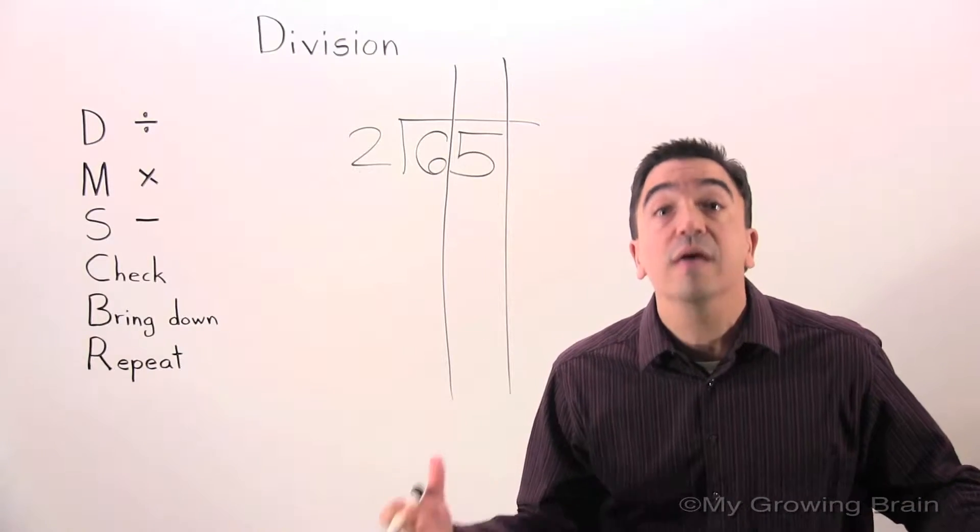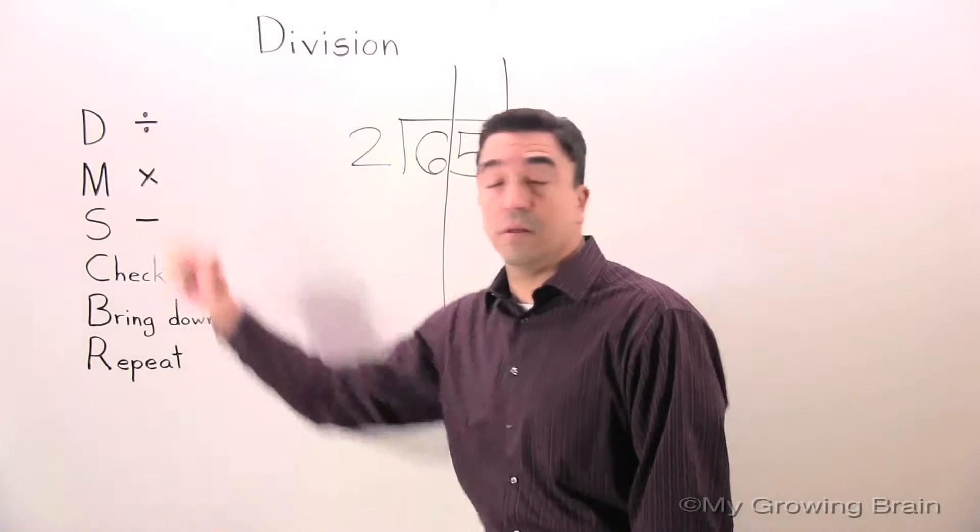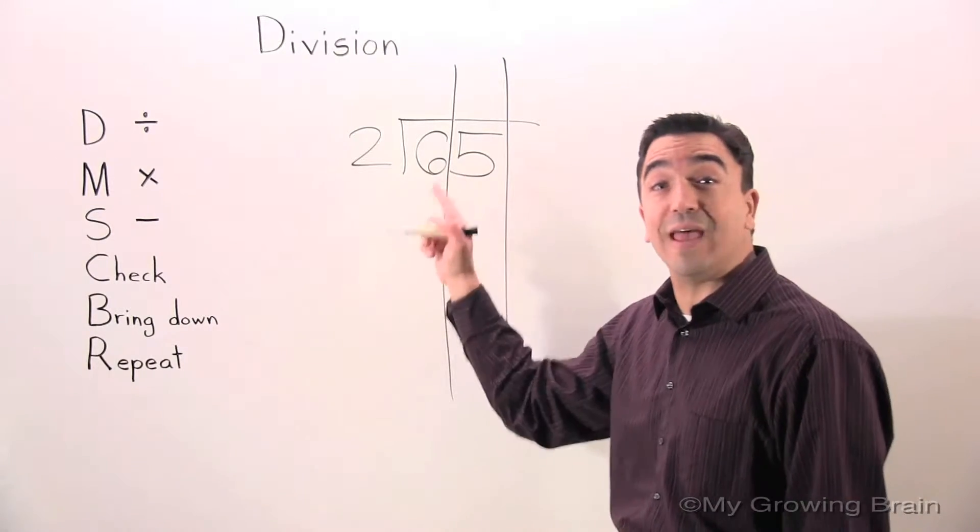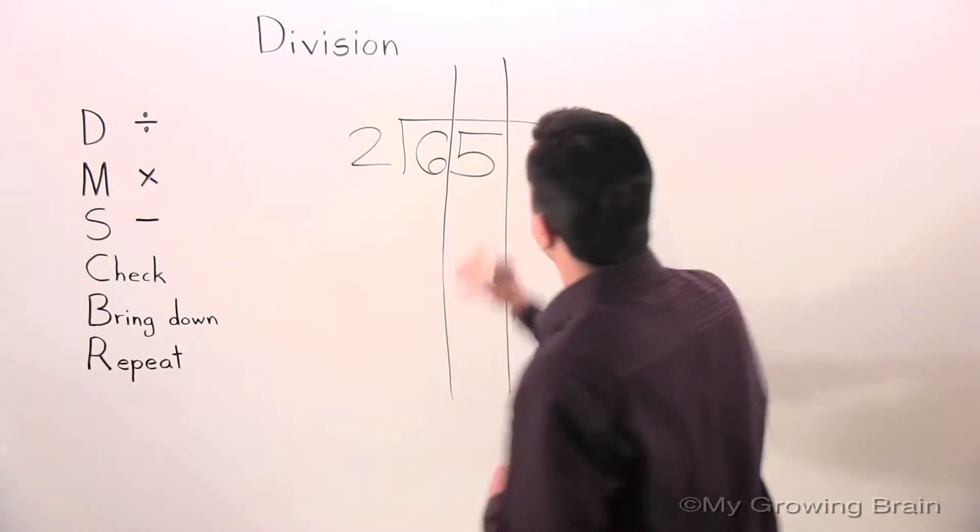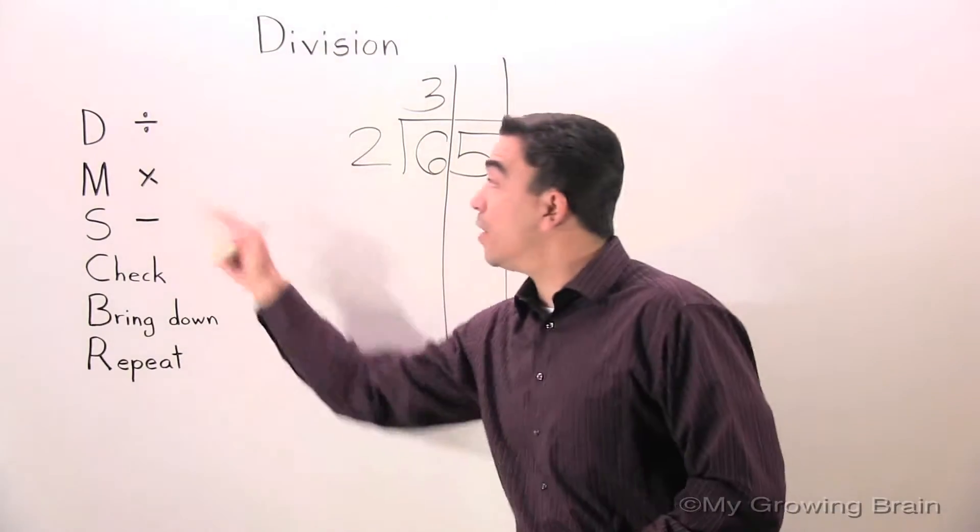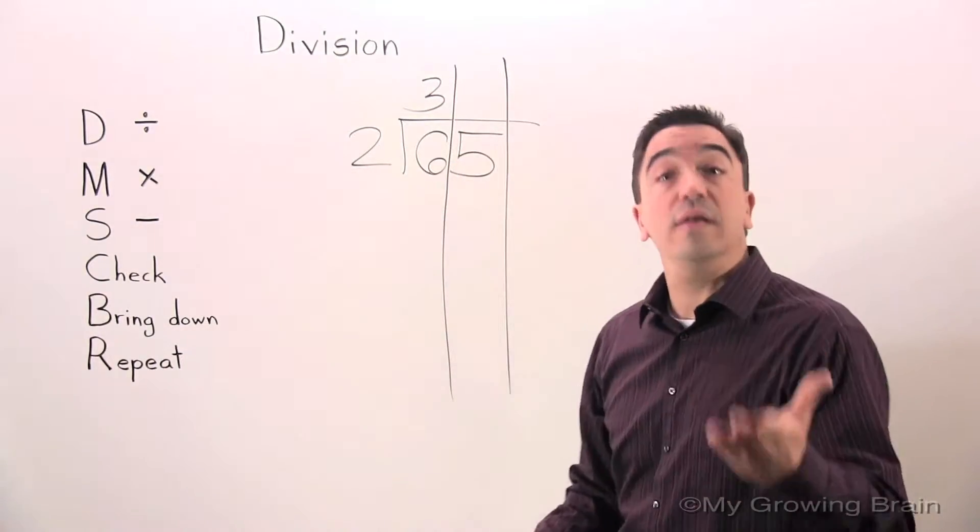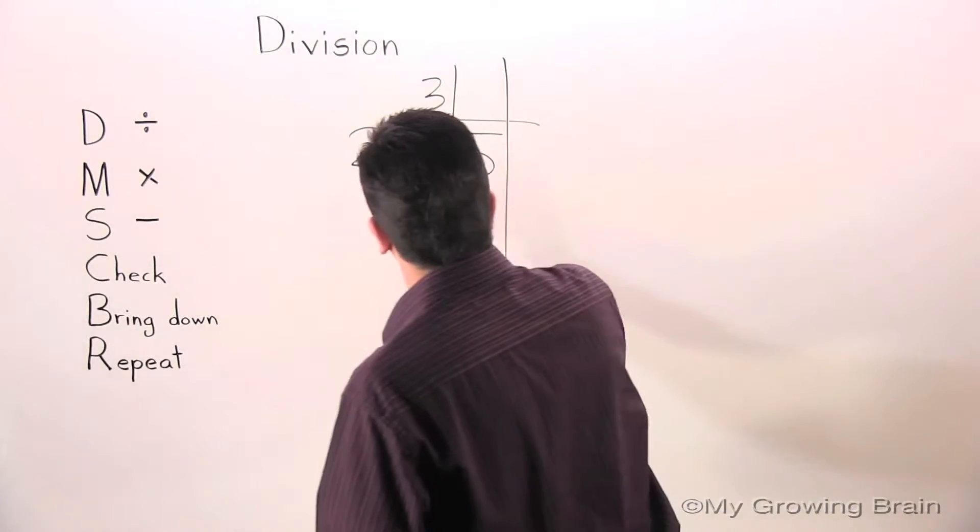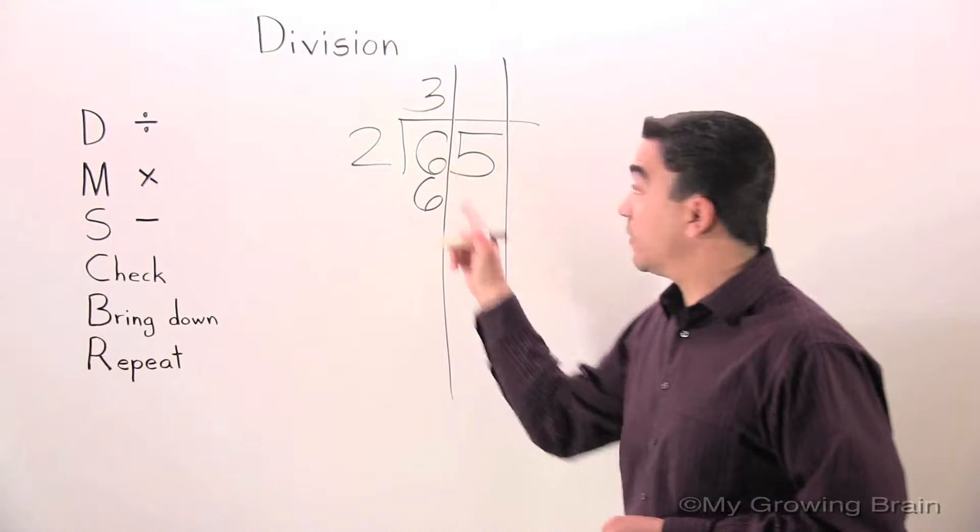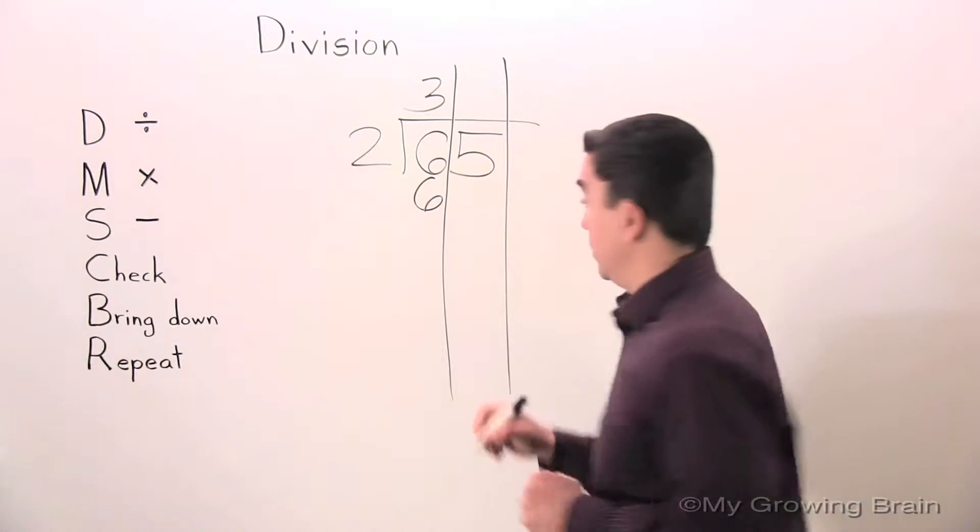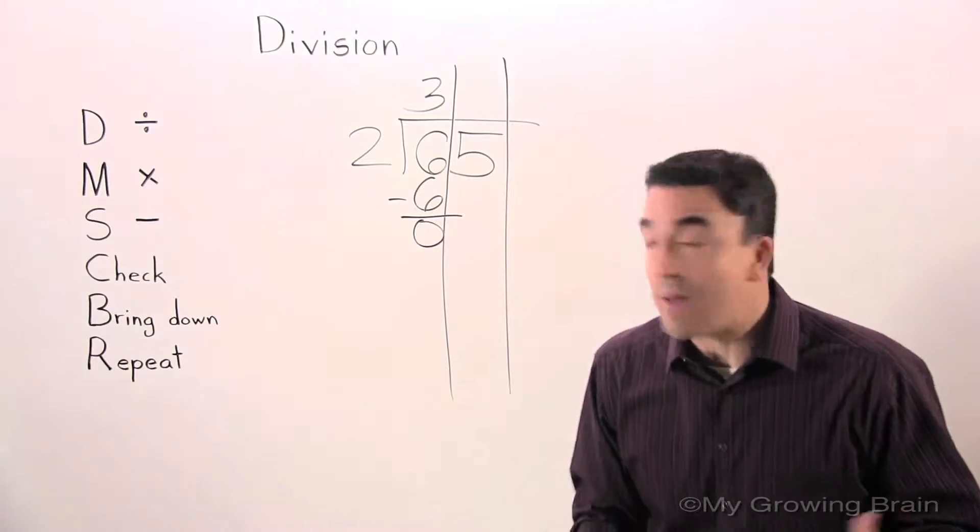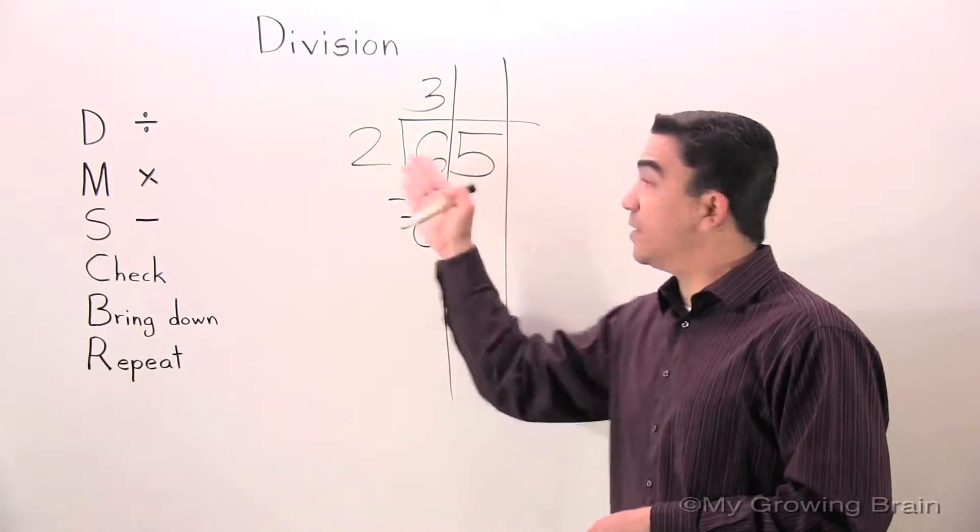First step, divide. 6 divided by 2, or 2 into 6. 3. Next step, multiply. 2 times 3, 6. Subtract. 6 minus 6, 0. Next step, check. 0 is less than 2. Keep on going.